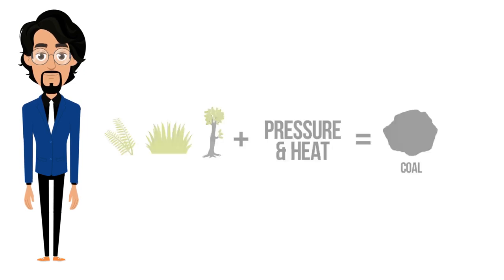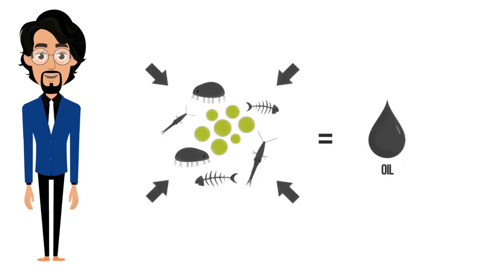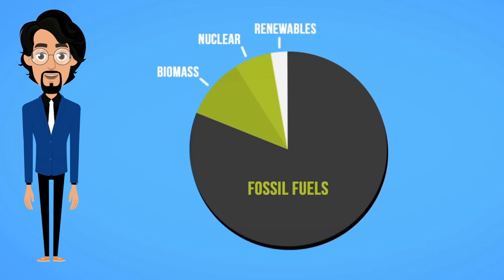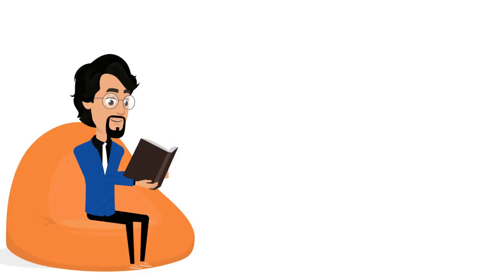Coal is formed from plants, ferns, and trees which harden due to pressure and heat. Oil is formed from smaller organisms like algae and zooplankton — intense pressure caused the formation of oil. Natural gas is formed similarly to oil, but the process is longer and subject to more heat and pressure. Fossil fuels are the world's dominant energy source, making up 82% of global supply.